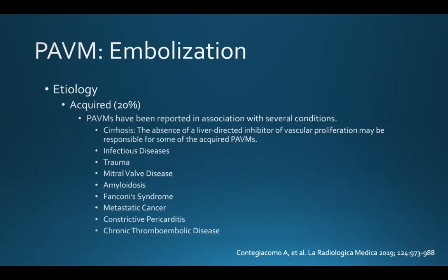The remaining pulmonary AVMs are acquired. Pulmonary AVMs have been reported in association with several conditions. They are seen with cirrhosis, where the absence of a liver-directed inhibitor of vascular proliferation may be responsible. Other conditions include infections, trauma, mitral valve disease, amyloidosis, Fanconi syndrome, metastatic cancer, constrictive pericarditis, and chronic venous thromboembolic disease.